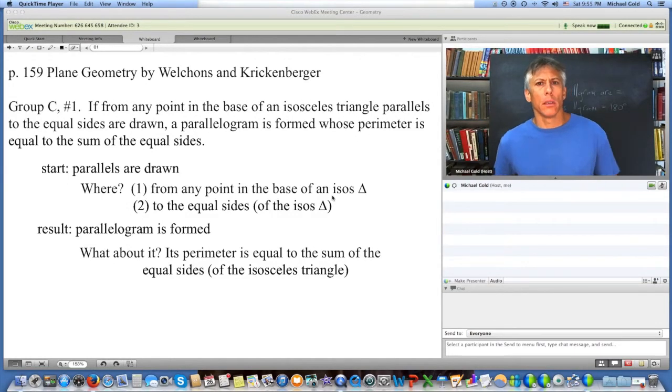Now, on this one, this one's a little difficult, just because of the grammar. It says, if from any point in the base of an isosceles triangle, parallels to the equal sides are drawn, a parallelogram is formed whose perimeter is equal to the sum of the equal sides. A lot of words. You might have gotten lost,